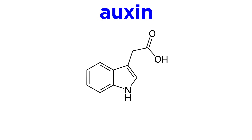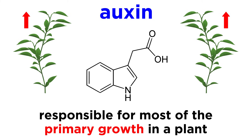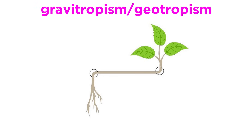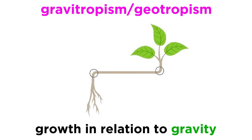The most important plant growth hormone is auxin. Auxin is responsible for most of the primary growth in a plant, including the lengthening and differentiation of cells from the meristem. Auxin is also responsible for much of a plant's sense of direction. Gravitropism, also known as geotropism, is growth in relation to gravity. The distribution of auxin within a plant's cells changes with the relationship between the direction of growth and gravity, helping the plant to grow correctly.